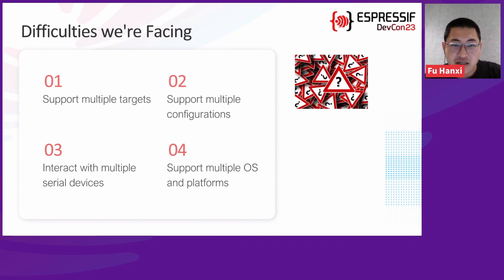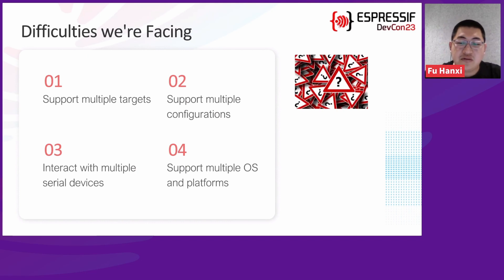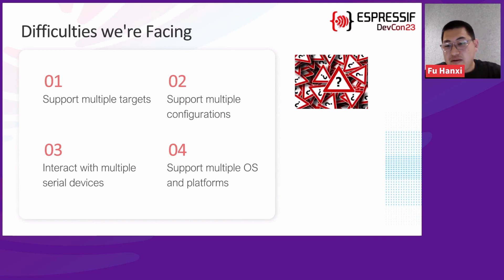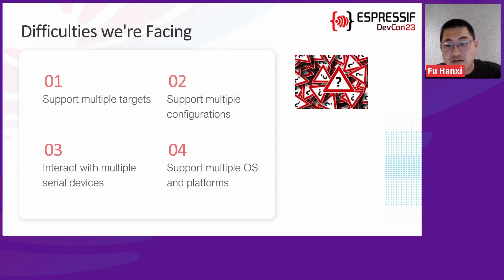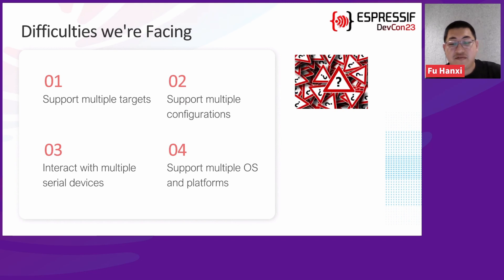The second difficulty is that we also need to support multiple configurations. A configuration is held in a single file called sdkconfig, if you're familiar with ESP-IDF. This file is usually modified via idf.py menuconfig to customize the configuration of the project. A single project may contain one or two configuration files to test with different combinations of configuration options.